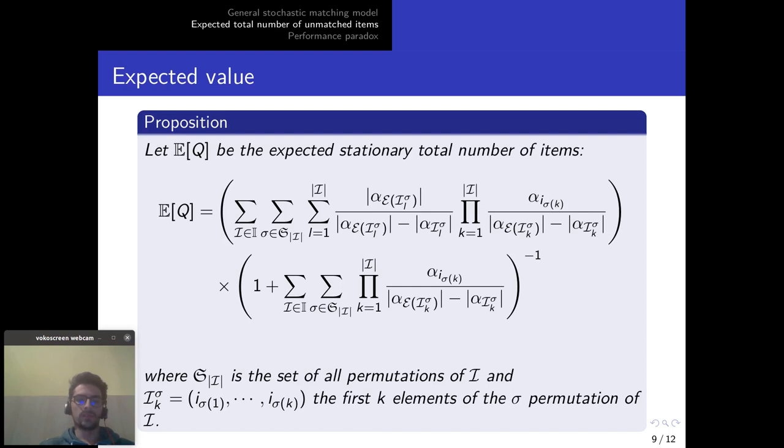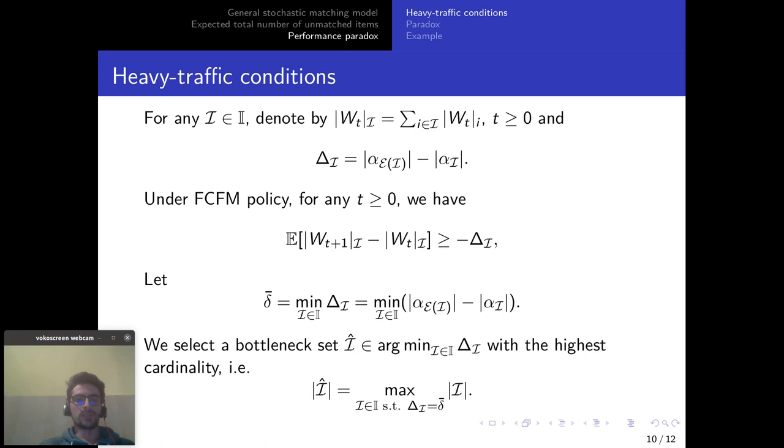Now to present the performance paradox let me first explain what is the heavy traffic conditions under which we operate. So I'm going to define delta i which depends on the different terms of the stability equation inequality you saw earlier and basically this delta i represents the minimal draining time at the subset of nodes in the system so the nodes belonging to the independent set i.